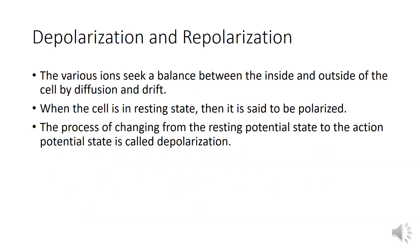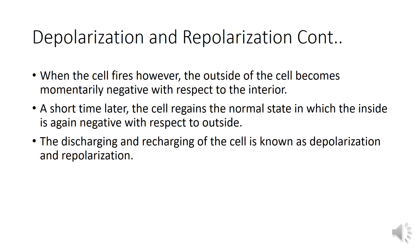Let us see about depolarization and repolarization. The various ions seek a balance between the inside and outside of the cell by diffusion and drift. When the cell is in a resting state, it is said to be polarized. The process of changing from the resting potential state to the action potential state is called depolarization. When the cell fires, the outside of the cell becomes momentarily negative with respect to the interior.